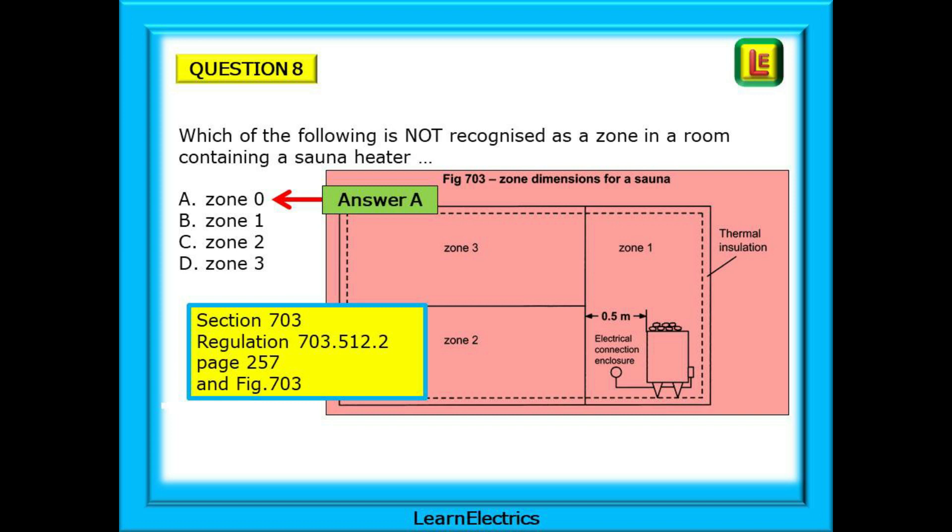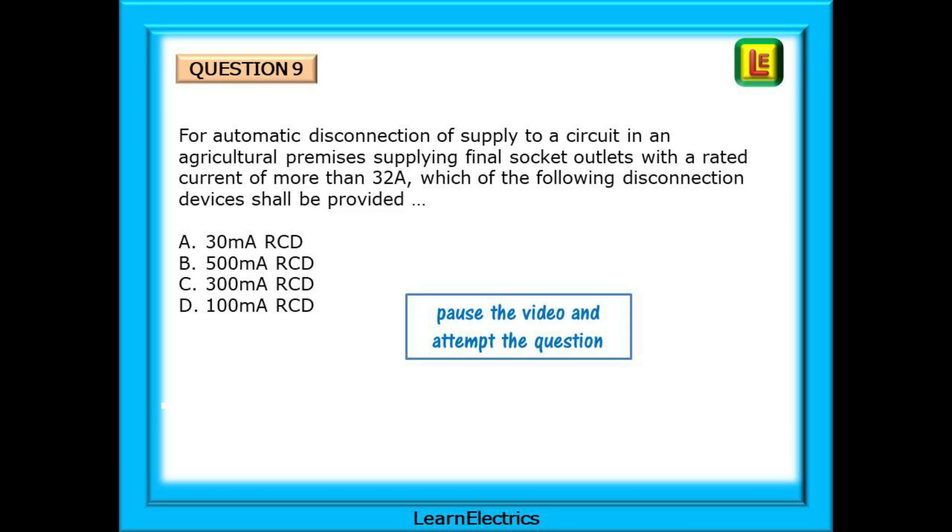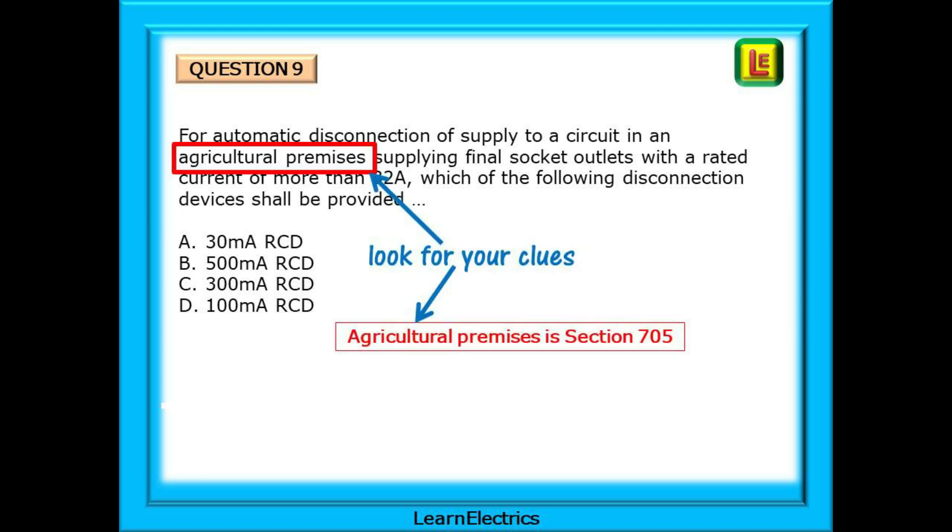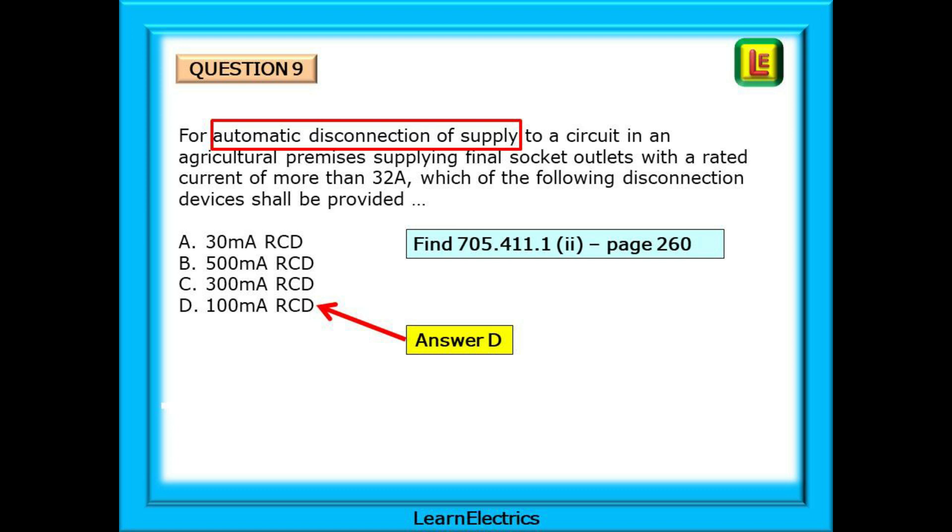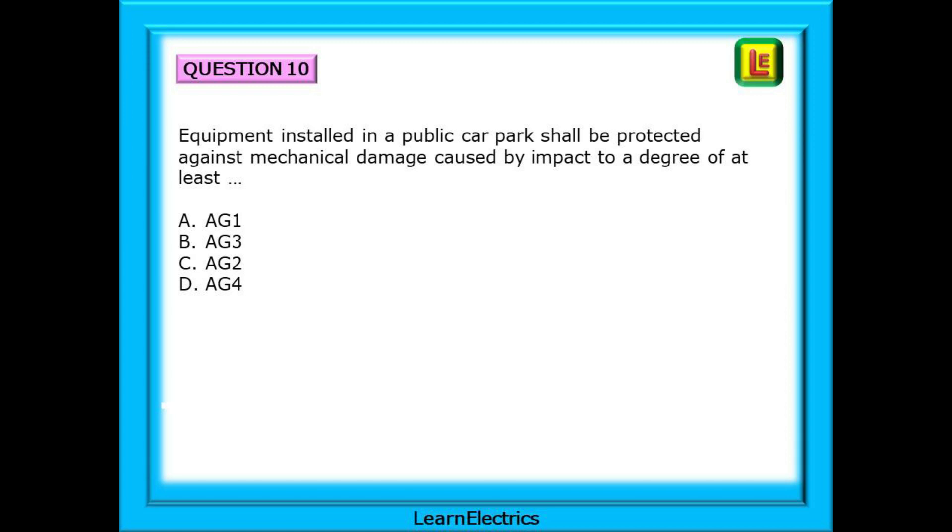Moving on to question number 9: For automatic disconnection of supply to a circuit in an agricultural premises supplying final socket outlets with a rated current of more than 32 amps, which of the following disconnection devices shall be provided? Pause the video and attempt to question yourself. Look for the clues: Agricultural premises. Checking on page 3 this is section 705. On page 260 under automatic disconnection of supply you will find Regulation 705.411.1 indent 2. The disconnection device should be a 100mA RCD, Answer D.